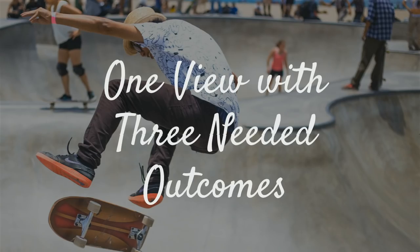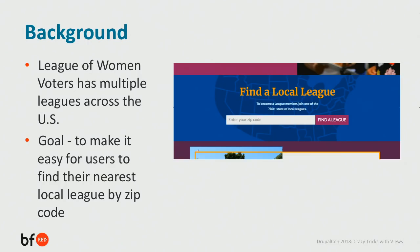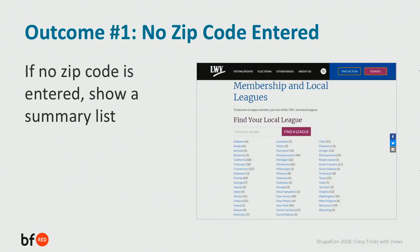In this first section, I'm going to discuss how we created one view with three needed outcomes. Our client was the League of Women Voters, and they have multiple local leagues across the United States that people can join. They wanted us to make it easy for their users to find their nearest local league by zip code. The first required outcome was: if no zip code is entered, display a summary list showing the state name and the number of local leagues within that state.